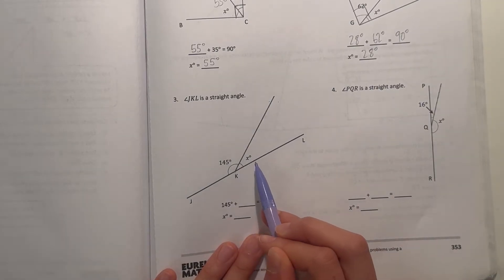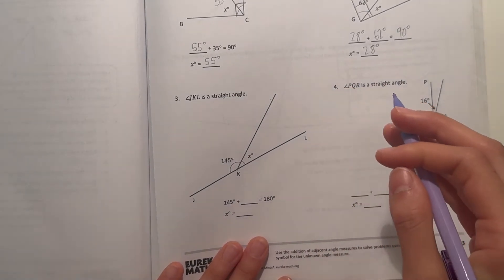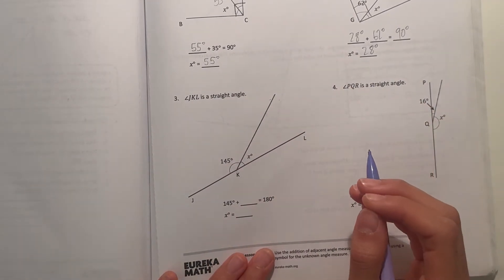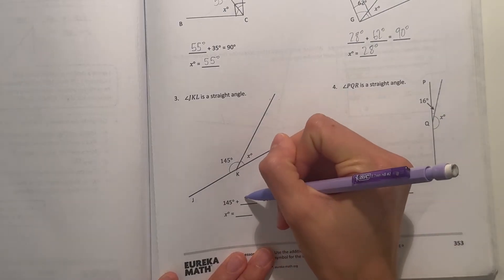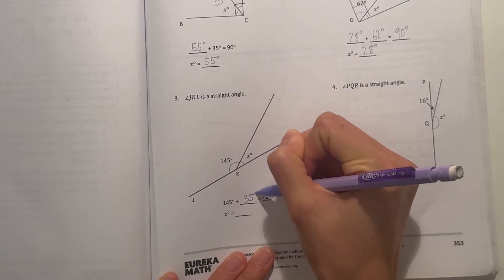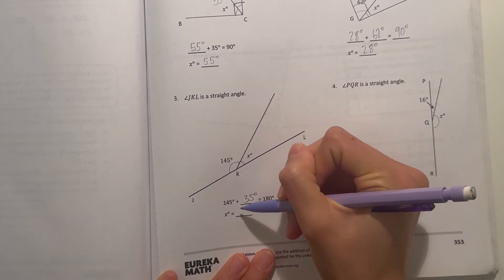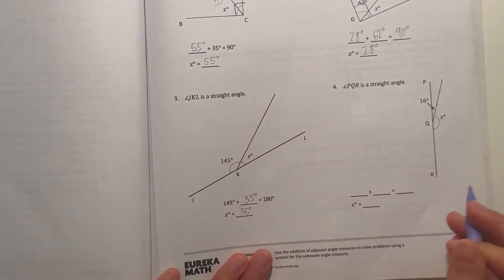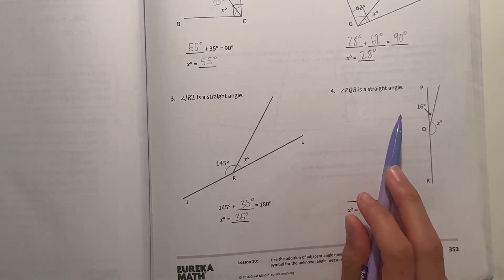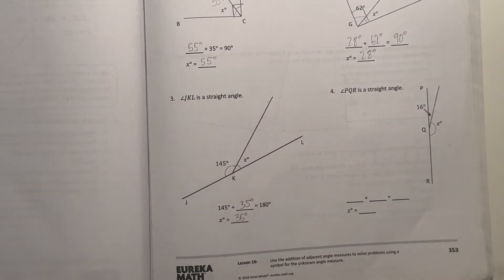So we need to do 145 plus x would be 180. So 180 minus 145 is 35. So 145 plus 35 degrees is 180. So x equals 35 degrees.